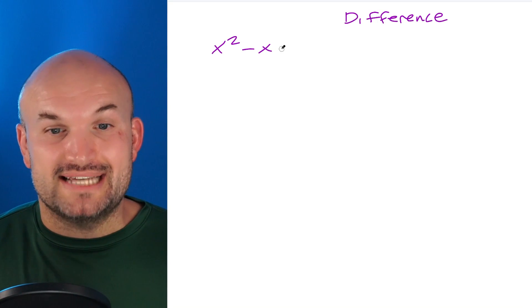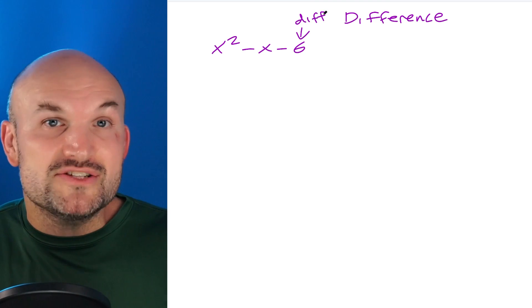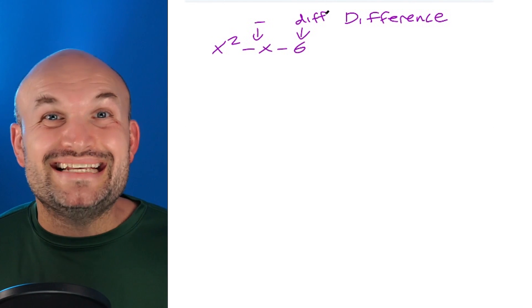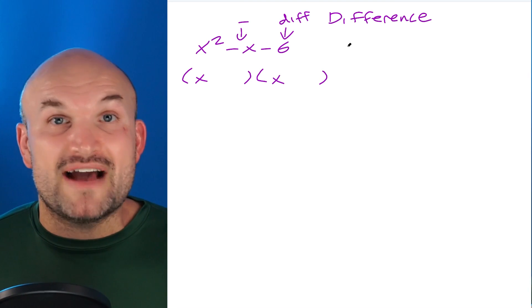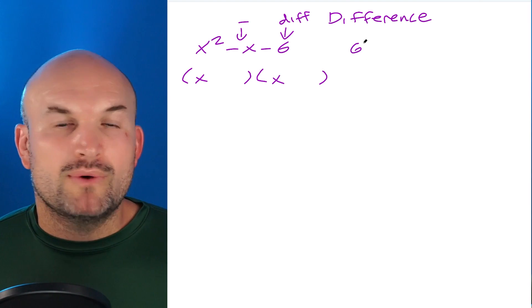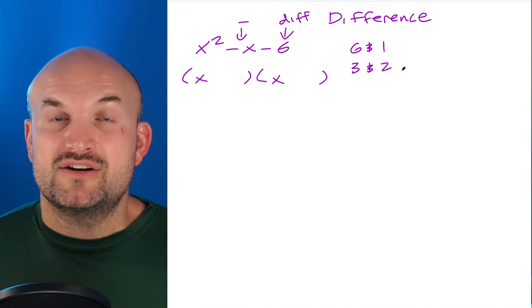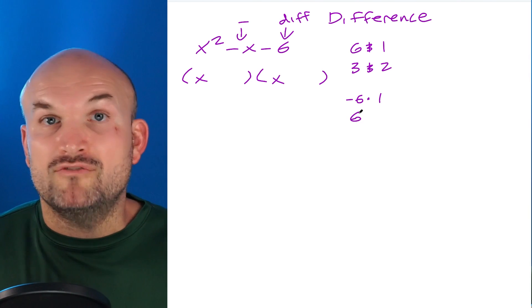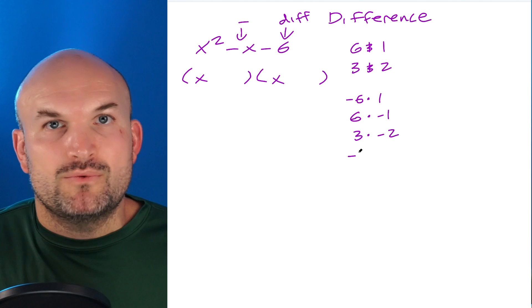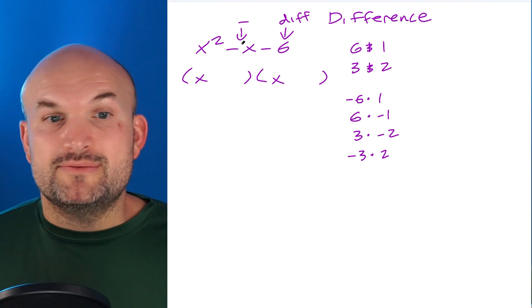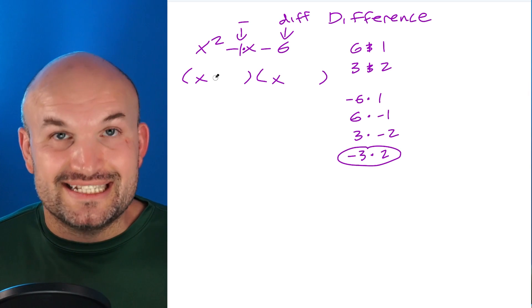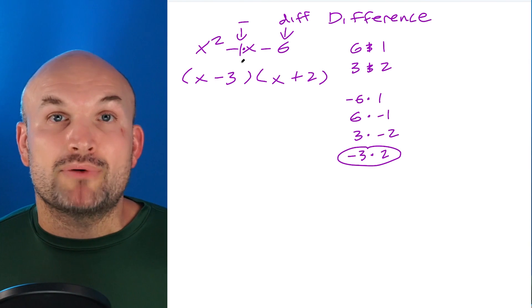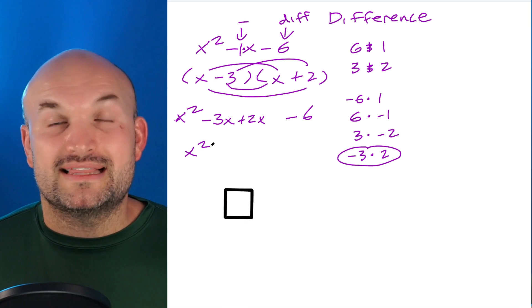When the last number is negative, we look for the difference. For x² − x − 6, the last term is negative, so I'm looking for a difference between the two factors equal to negative 1. Setting up the product of two binomials with x and x as the first terms, one factor must be positive and one negative. Looking at the positive factor pairs of 6: (6, 1) has a difference of 5, and (3, 2) has a difference of 1 — so 3 and 2 is the winner. Since the middle term is negative, negative 3 times positive 2 gives the right difference. I plug those in and multiply out to confirm.